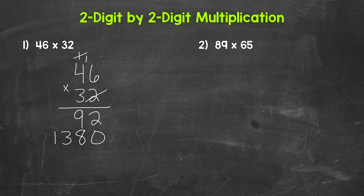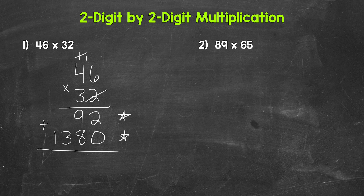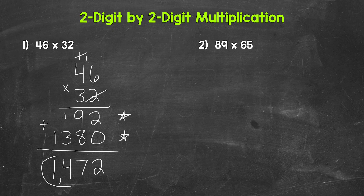Now we add these — 92 and 1,380. 46 times two gave us 92, and 46 times 30 gave us 1,380, so we're adding those to get our final answer. Two plus zero is two, nine plus eight is 17, one plus three is four, and then we have a one in the thousands place. So our final answer is 1,472.